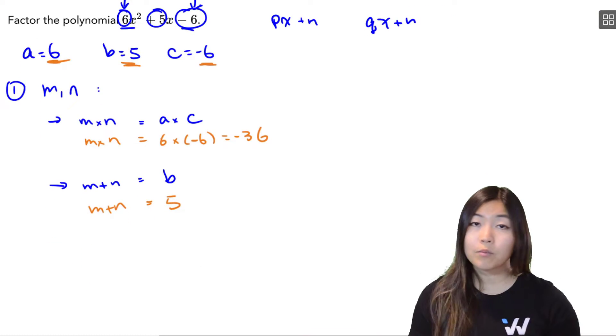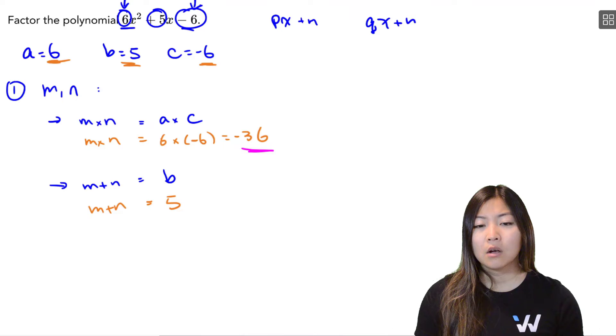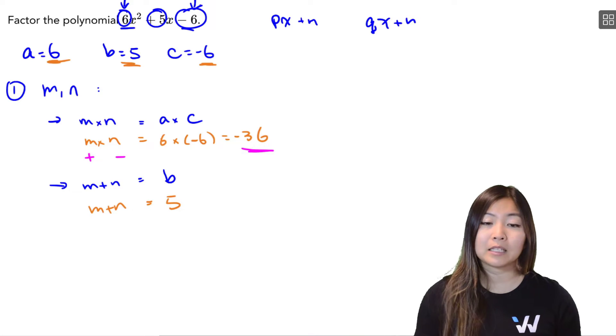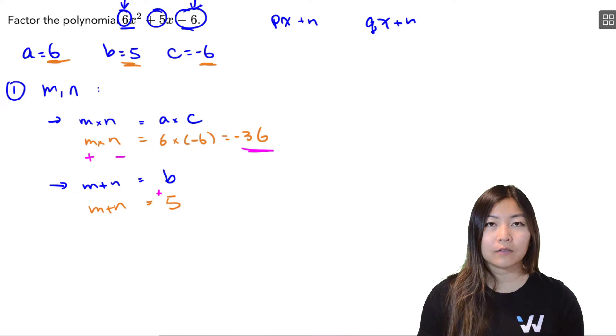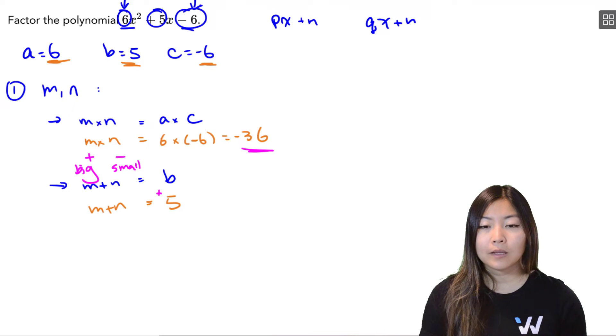So I need to write out all the different possibilities for this. Now, if I want two numbers to multiply to give me a negative number, one of them has to be positive, one of them has to be negative. But once I add them, I want an overall positive. So the bigger number is going to be my positive, and the smaller one is going to be my negative.